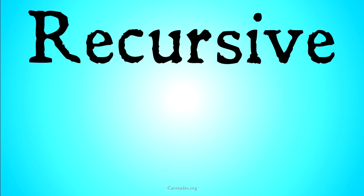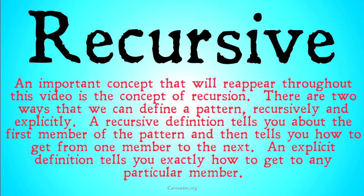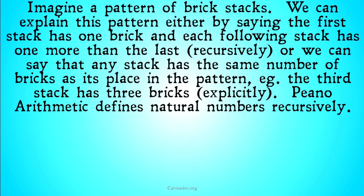And it's the difference between a recursive definition and an explicit definition. Basically, there are two ways that we can define a pattern: recursively and explicitly. A recursive definition tells you about the first member of a pattern, and then tells you how to get from one member to the next. An explicit definition tells you exactly how to get any particular member of a pattern. The recursive definition explains the pattern by talking about the first member and then saying how to get to the next member, and then how to get to the next member, and so on and so forth. Whereas an explicit definition will tell you exactly how to get to a particular member.